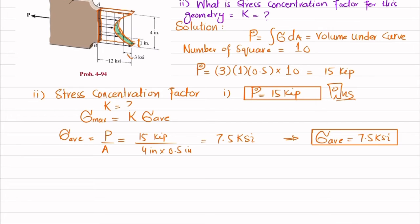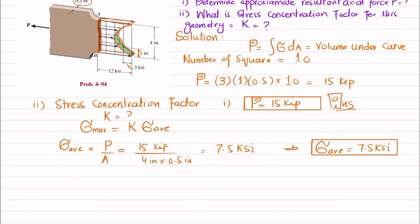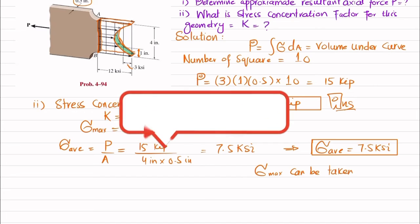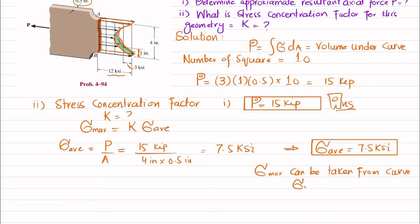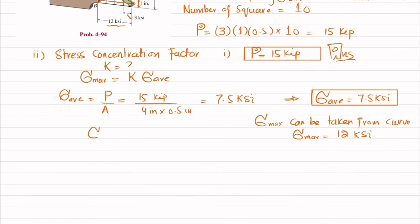You will need average maximum stress. So maximum stress can be taken from curve and that maximum stress is 12 ksi. So sigma max is equal to 12 ksi. So we know that maximum stress is equal to K into sigma average.